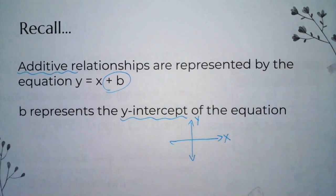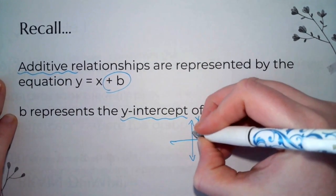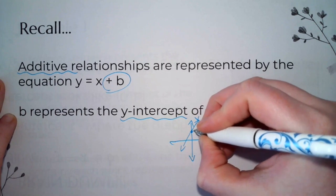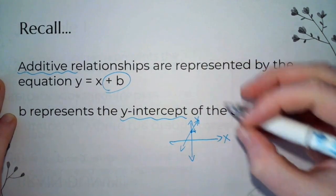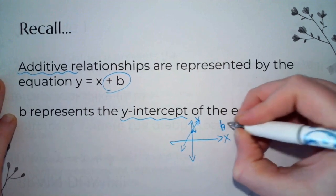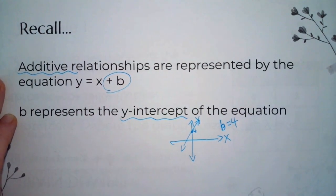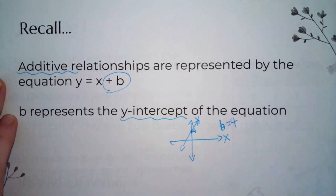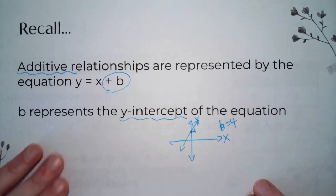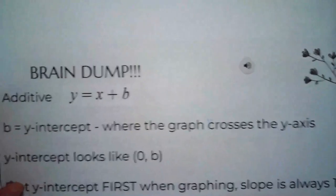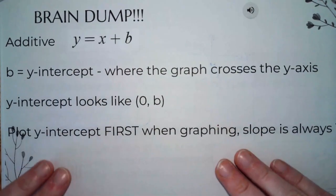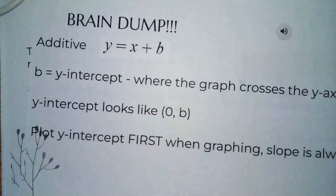Remember, the x-axis goes left to right and the y-axis goes up and down. If my line crosses the y-axis at positive 4, that's the y-intercept and b equals 4. You're going to learn more about this in eighth grade, but for now let's keep it simple. Write this down — you have it on your slide — and I will give you tickets when I come back.